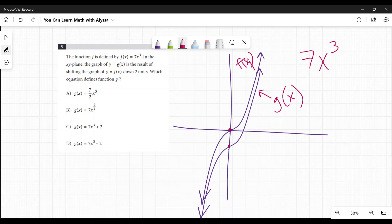So that is a y change. That means it's going to be outside. It's not going to be like an x and then a parentheses thing that would move it left or right along the x-axis. It's going to be on the outside. It's moving down two or minus two. So 7x³ - 2 or D is my answer.